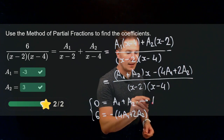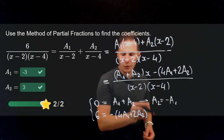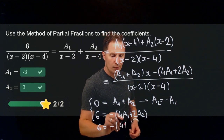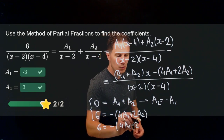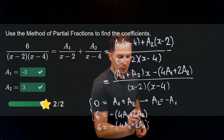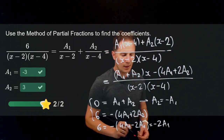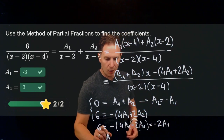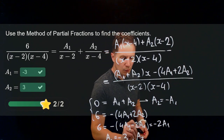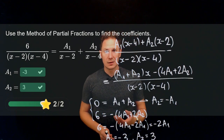From the first equation, a2 must equal negative a1. Substituting into the second equation gives 6 equals negative 4a1 minus 2a1, which is negative 6a1. Wait — that is negative 2a1 times 3, so negative 6a1... Dividing both sides by negative 2 gives a1 equals negative 3, and since a2 equals negative a1, a2 equals positive 3.